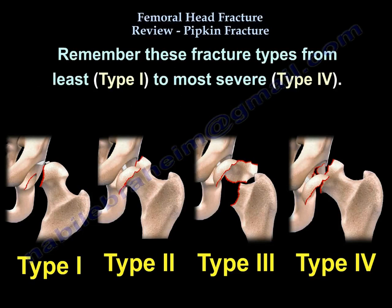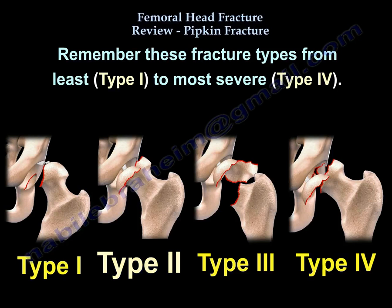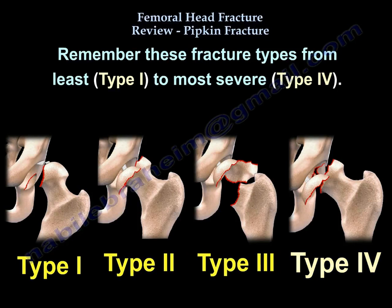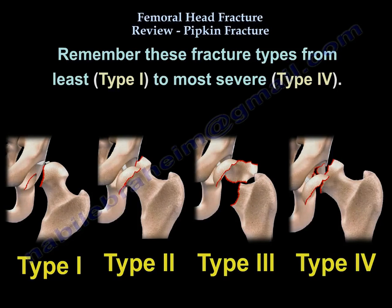How do you remember these types? You go from the least important to the more important injury within the same bone. If the injury extends out to another bone, then it is really complicated. So type 1 is the least severe, followed by type 2, type 3, and type 4 — which involves another bone, the acetabulum.